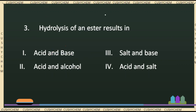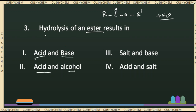The next question is a very basic question from organic chemistry. The question is: hydrolysis of an ester. An ester is R-COO-R'. If you do hydrolysis by adding H₂O, we can have products. Options are: acid and alcohol, salt plus base, acid plus salt. When we do acid hydrolysis, we break the COO-R' bond. We add OH and H to oxygen, forming alcohol and carboxylic acid. So the right answer is carboxylic acid and alcohol.